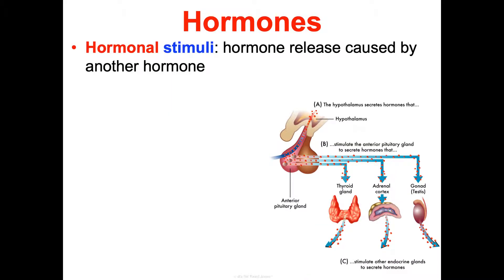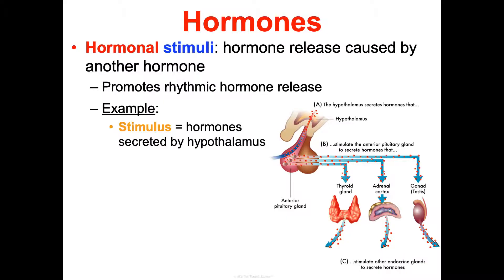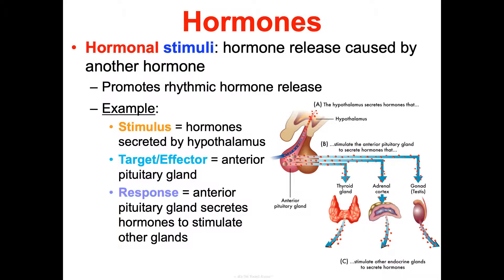Hormonal stimuli is when hormone release is caused by another hormone instigating it, creating a rhythmic, cascading hormone release. A major player here is the hypothalamus, which releases hormones that stimulate many different glands, especially the anterior pituitary gland. The anterior pituitary then creates hormones that go on to stimulate other glands, creating a cascading effect.